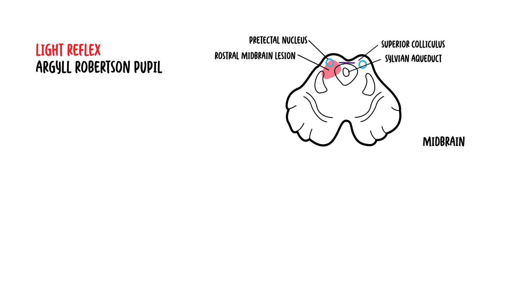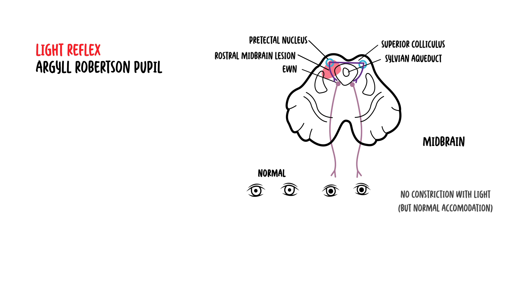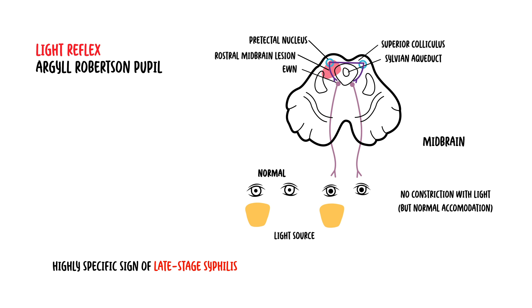Damage to this area would affect the efferent pupillary fibres located on the dorsal aspect of the Edinger-Westphal nucleus (EWN). Essentially, this results in no pupils constricting, so there is no light reflex present. Argyll-Robertson pupil is a highly specific sign of late-stage syphilis.